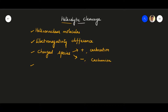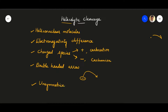For heterolytic cleavage, to express the transfer of electrons we use a double-headed arrow. In homolytic cleavage we used a single-headed arrow, meaning only one electron is transferred. Here, the double-headed arrow means a pair of electrons is being transferred or involved in the cleavage. Heterolytic cleavage is otherwise known as unsymmetrical splitting or unsymmetrical cleavage — there is no symmetry in the fission of covalent bonds.